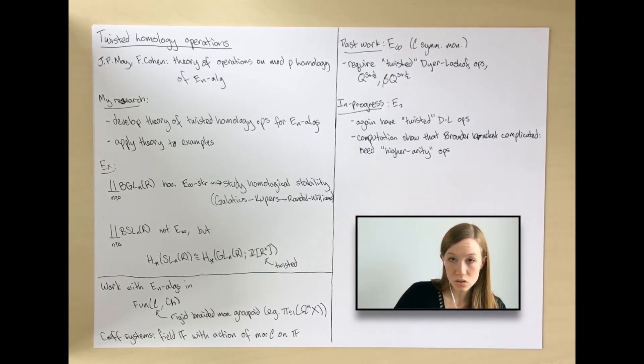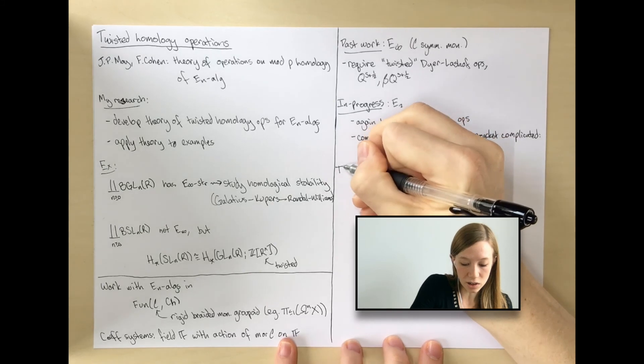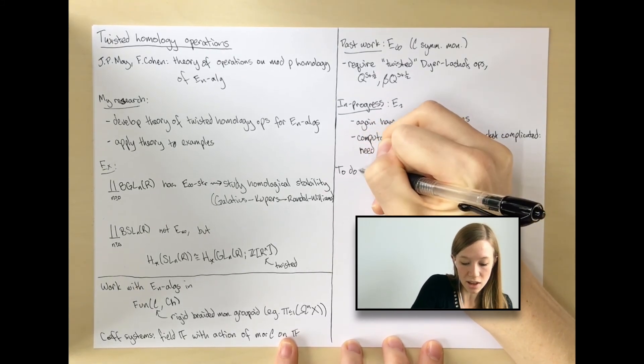But depending on what coefficient system you have, you might have several of these new operations, and it's so far very mysterious how they all relate to one another. I'm still working on understanding this. But I expect that once I have a generating set for these Browder brackets, that together with the twisted and classical Dyer-Lashof operations will generate all operations here.